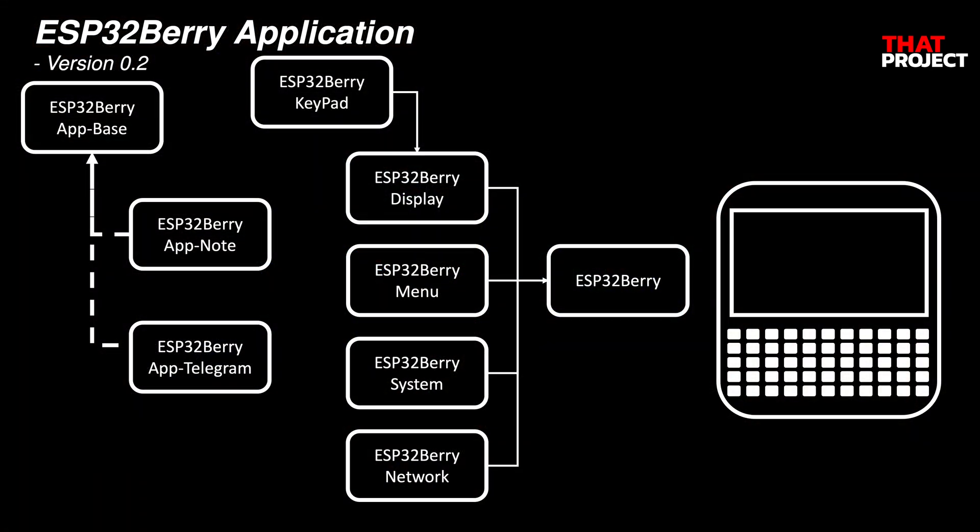This is the system structure of this version. With this update, the overall system structure has been changed. I created a new menu class by separating the menu that was in the display class. I also created a parent class called AppBase to inherit and implement the common parts of the app. As the version is updated, the system will continue to be modified. I also plan to support the virtual keyboard, so please look forward to the next version.